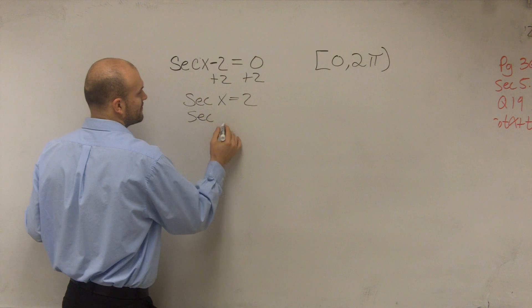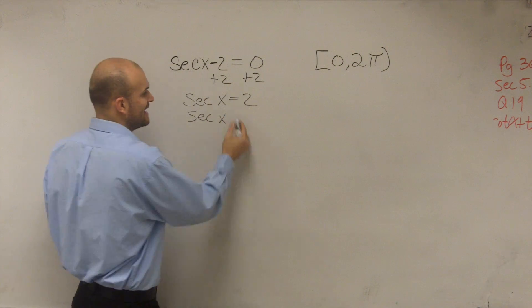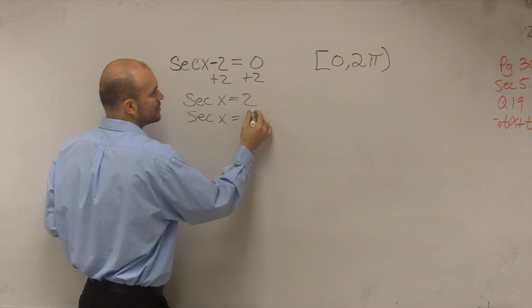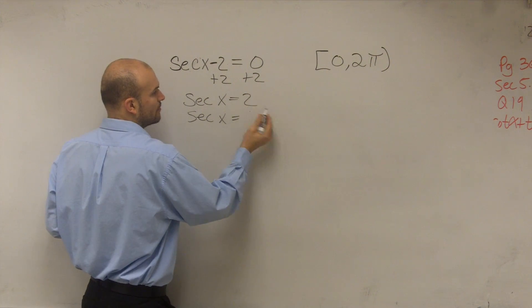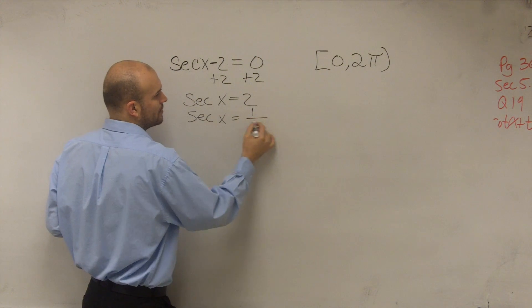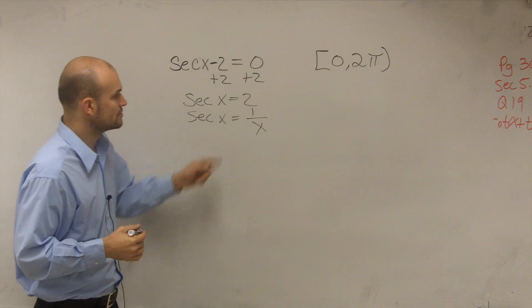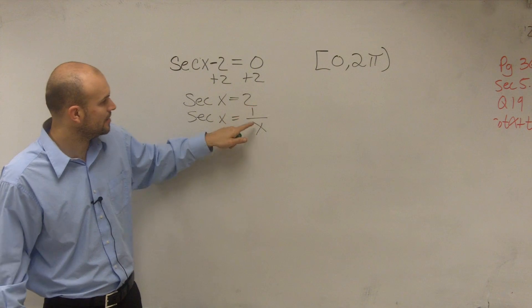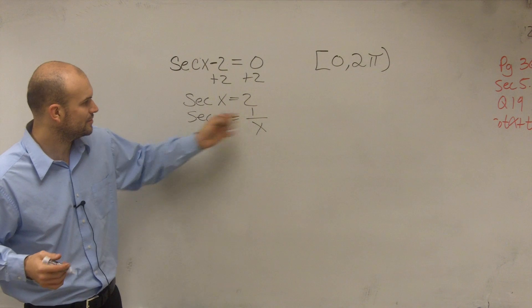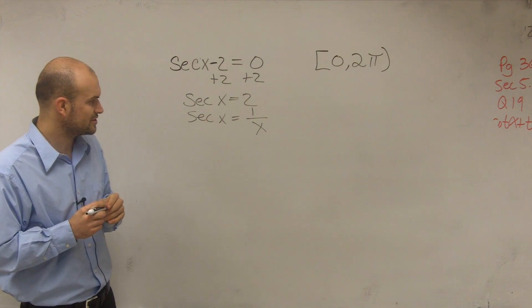Remember the secant function. Secant of any angle equals the radius over x. In the unit circle, radius is 1, so secant equals 1 over x, which equals 2.